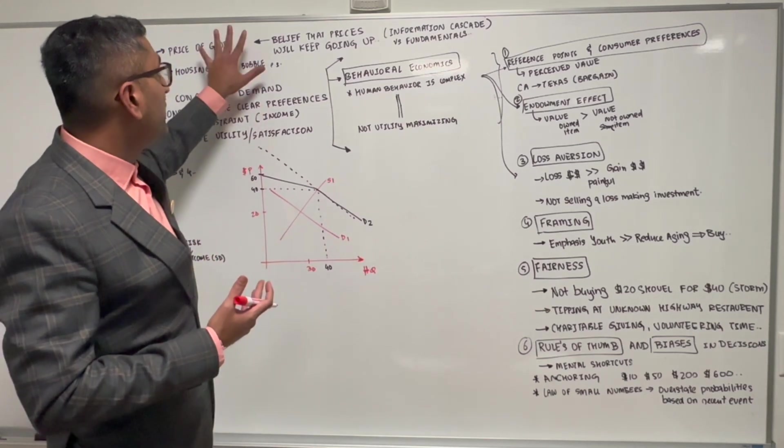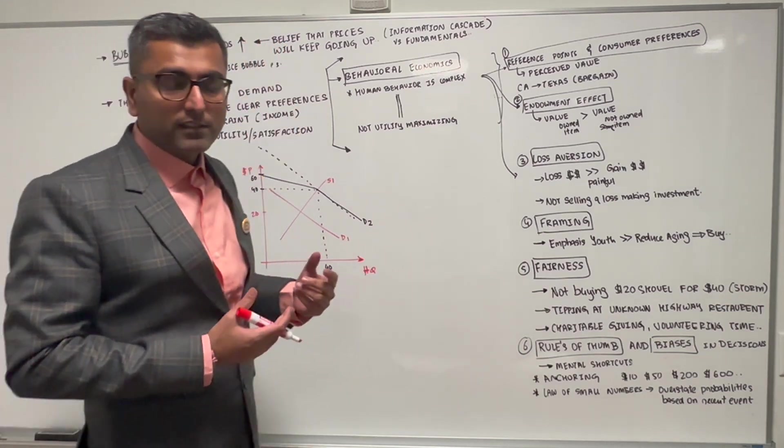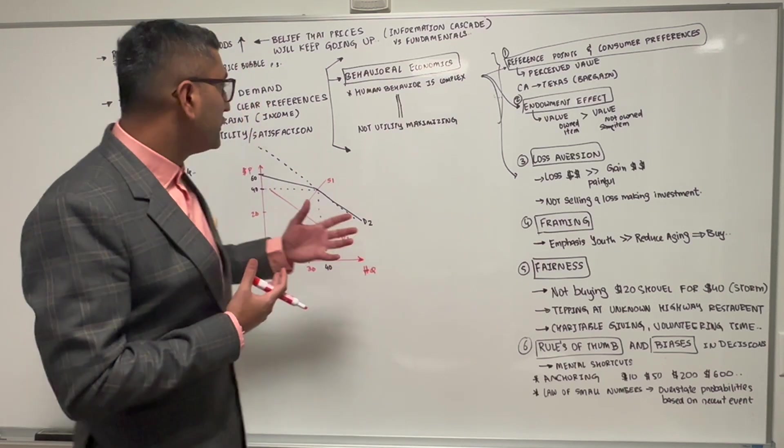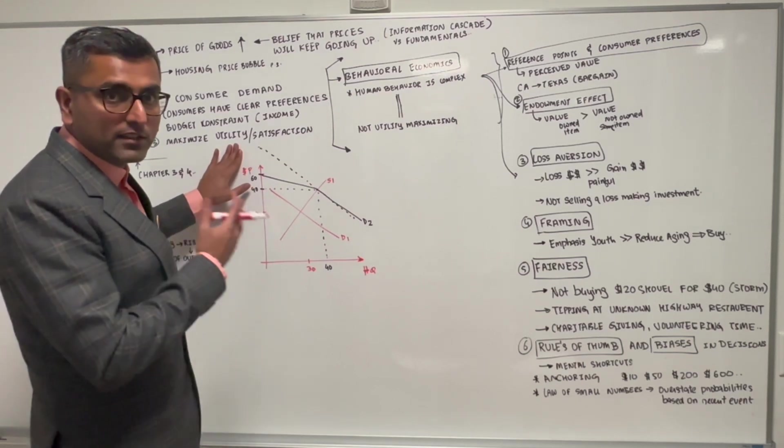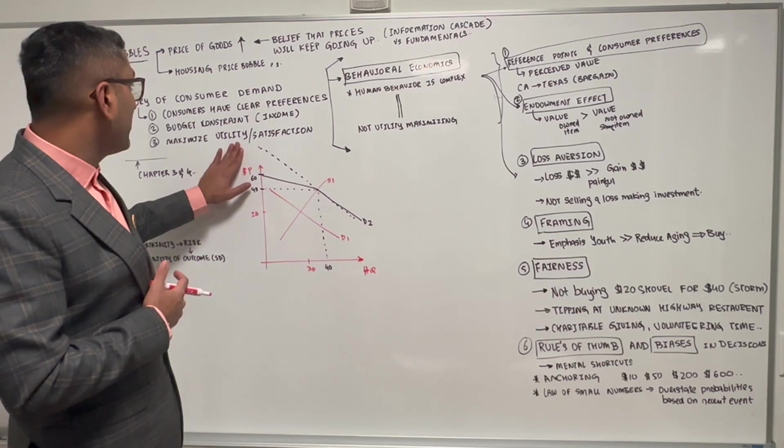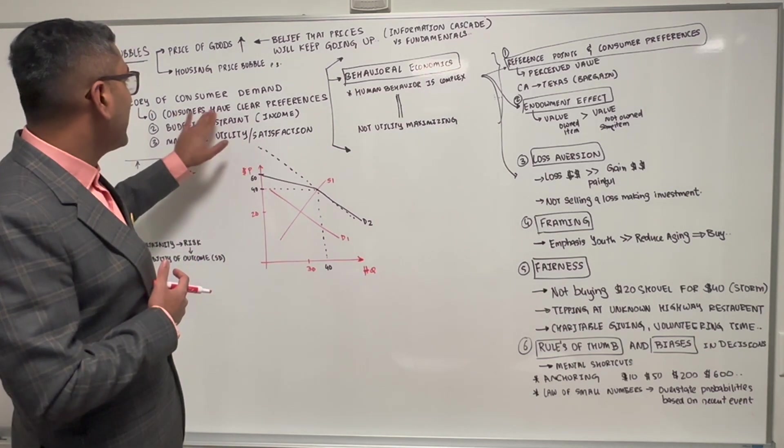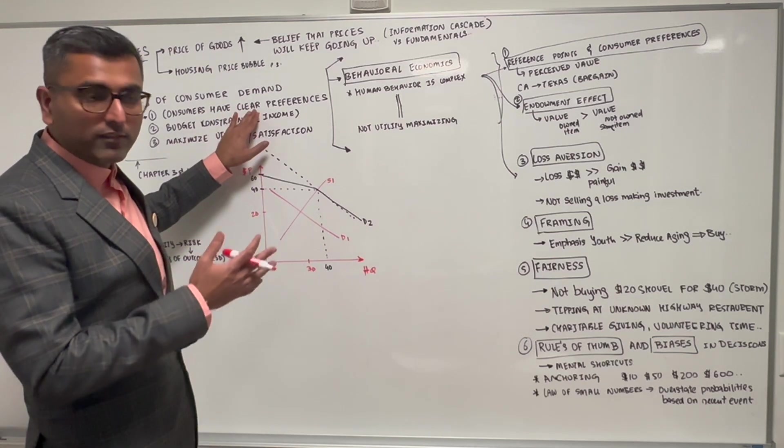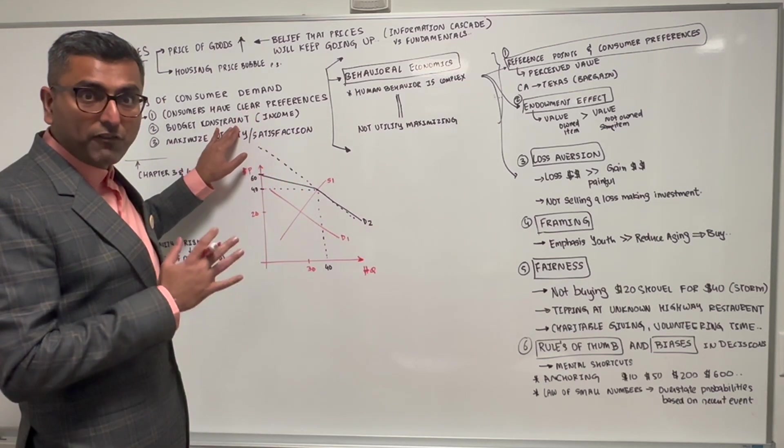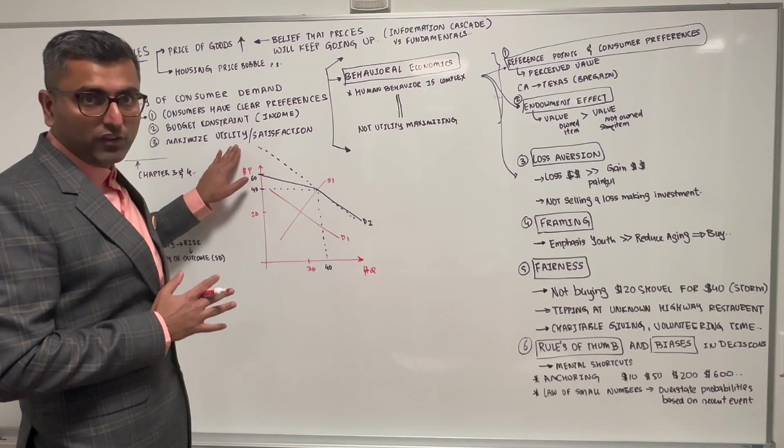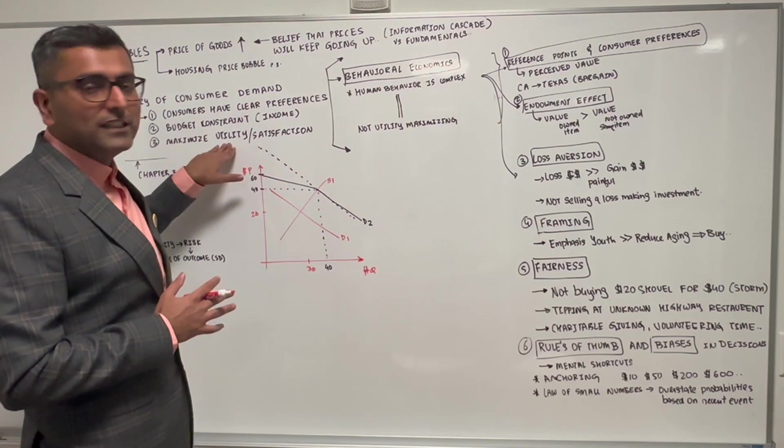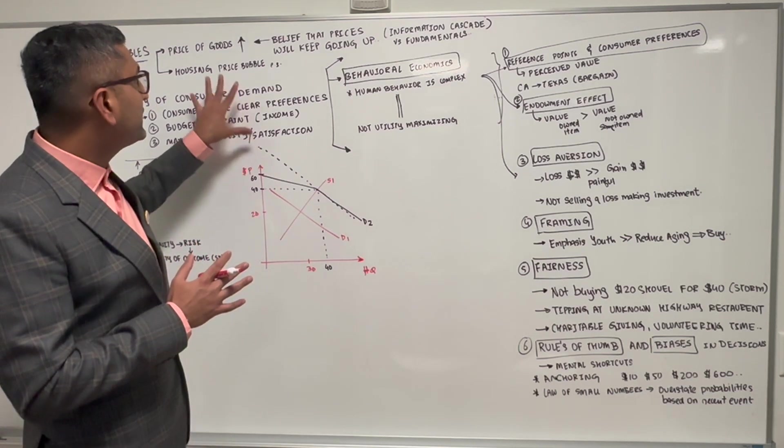These bubbles happen for various reasons. Human beings make decisions not purely to maximize utility. The theory of consumer demand assumes three things: consumers have clear preferences, they have a limited income with a financial budget constraint, and they want to maximize their utility or satisfaction of goods they choose based on their preferences. Maximizing utility is not always the case, and that's why you see these bubbles being formed.